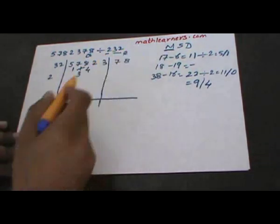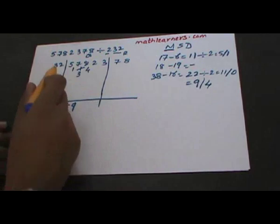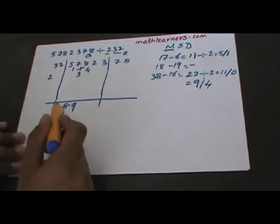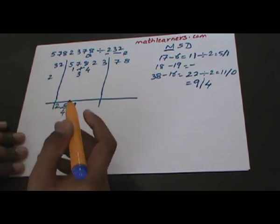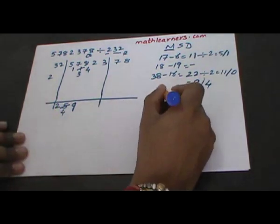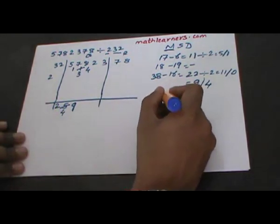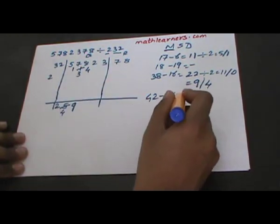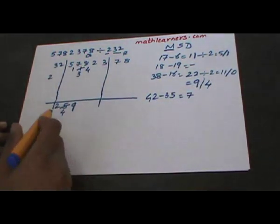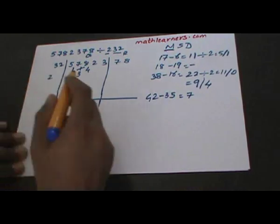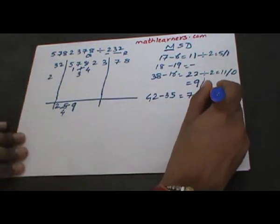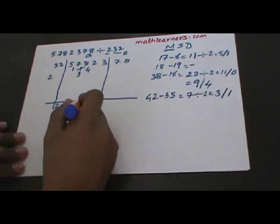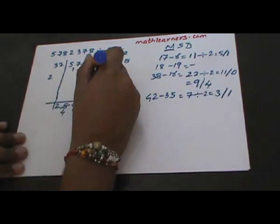Cross multiplication: 3 multiplied by 9 plus 2 multiplied by 4 gives 27 plus 8 equals 35. 35 subtracted from 42 gives 7. 7 divided by 2 gives quotient 3 and remainder 1.